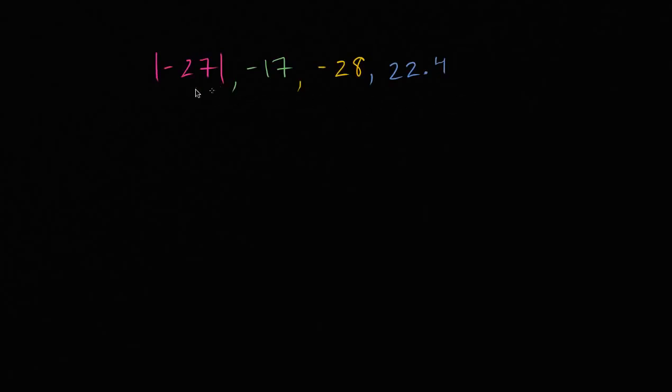So what we have here is four different values, some of them expressed with negative numbers and or absolute value. And what I want to do is I want to sort them from least to greatest, where the least is on the left and the greatest is on the right. So sort from least to greatest.